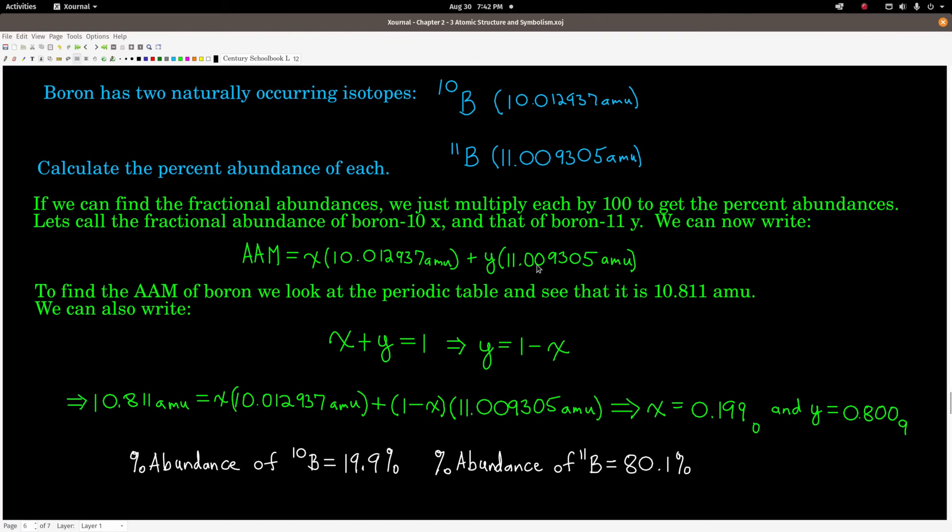If we call the fractional abundance of boron 10 x, that of boron 11 y, we can write this. The average atomic mass for boron is x times the mass of boron 10 plus y times the mass of boron 11. But remember, the sum of the fractions have to equal one. In this case, there's just two fractions. So we can say x plus y is equal to one or y is equal to one minus x. Now with that, we can substitute into this equation so that we only have one unknown. So we can write the average atomic mass of boron, which, by the way, where I got this number, right here, the 10.811, is I just looked on a periodic table. And you should know that's where you go to find the average atomic mass. Knowing what element it is, you can look that up.